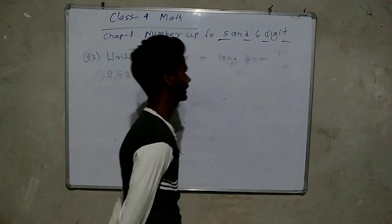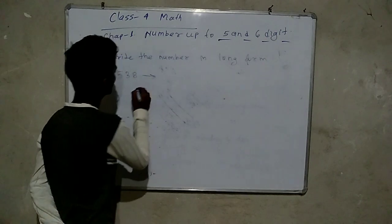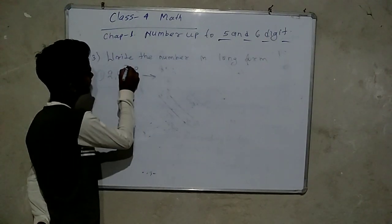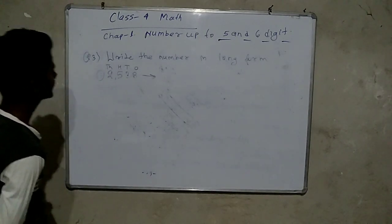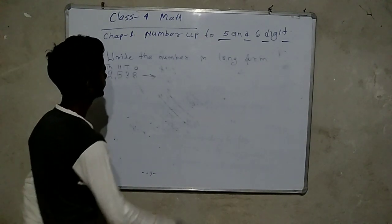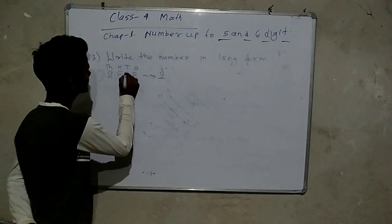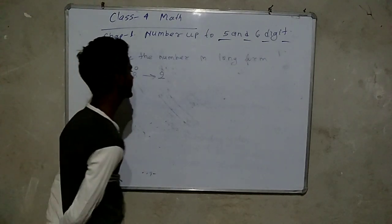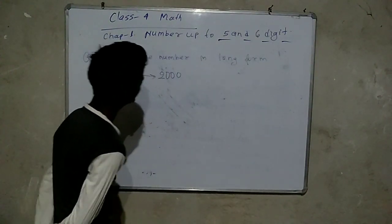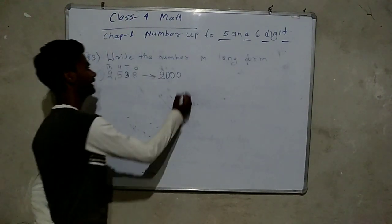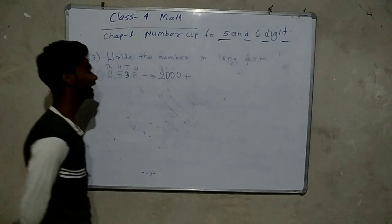Next question: write the number in long form. So, thousands place has two — write 2 followed by three zeros. Then add a plus sign. Hundreds place has five — write 5 followed by two zeros. Then add a plus sign. Tens place has three — write 3 followed by one zero.